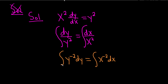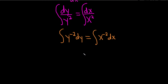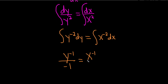Now we can apply what's called the power rule. The power rule says when you have a variable to an exponent, as long as that exponent is not negative 1, you add 1 to the exponent and you divide by the result. So negative 2 plus 1 is negative 1, giving us y to the negative 1 over negative 1. On the right-hand side, again negative 2 plus 1 is negative 1, so we have x to the negative 1 over negative 1, and then our constant of integration, capital C.